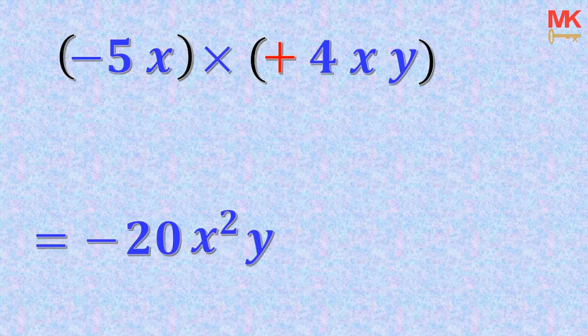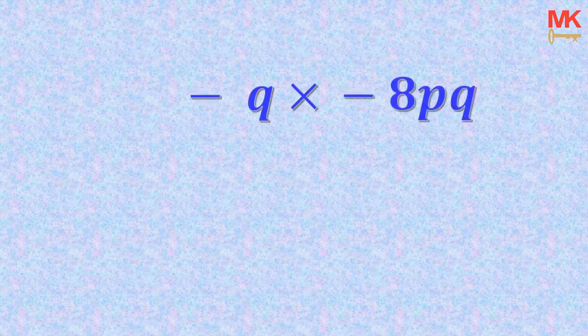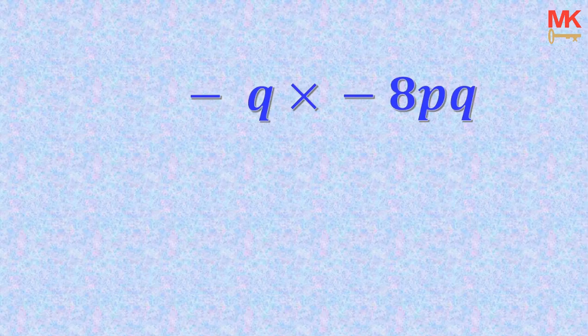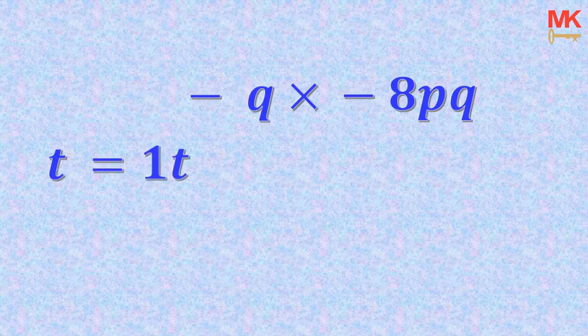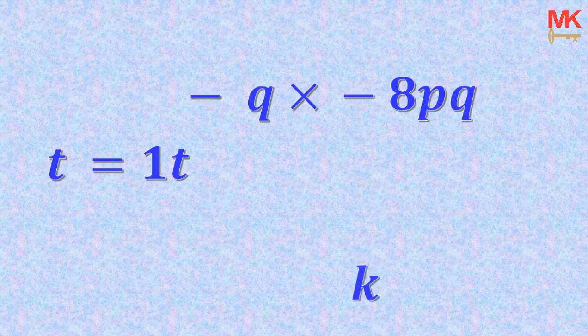Now let's see another example: negative Q multiplying negative 8PQ. Whenever a letter is written without any number at the front, by default it has an invisible constant coefficient of 1. A coefficient is a number written directly in front of a letter. For instance, the letter T is mathematically written as 1T, but we don't indicate the coefficient of 1 unless needed. Similarly, K is 1K. So by default, we introduce a coefficient of 1 in front of the variable Q.